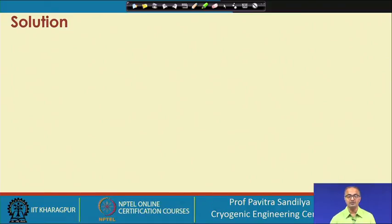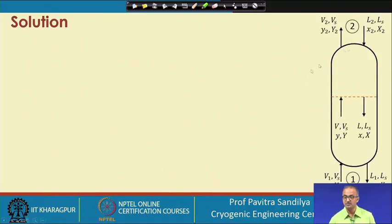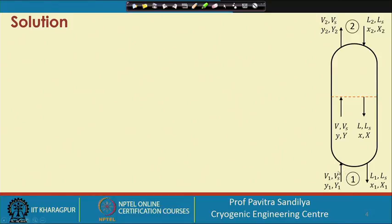Let us analyze this problem. This is a packed column packed tower, so absorption is going on. We are given the feed which has to be treated, and we are using a solvent. These two pieces of information are available to us, and we also know how much cyclohexane we want to extract. So we also know the outlet concentration of cyclohexane in the vapor phase.